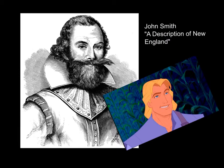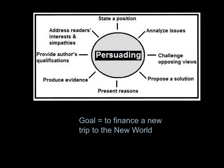The next piece we read is from John Smith. It is entitled A Description of New England, and although that sounds very analytical, it actually is written as a persuasive speech. Smith's primary goal in writing A Description of New England is to finance a trip to the New World. He is going to make very clear the positive aspects of traveling to the New World with him, reaching out to as many people as possible without angering anyone whose help he may need. We're going to look at the elements that he uses in order to make the piece a persuasive piece.